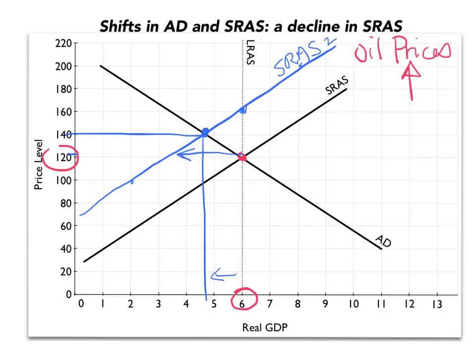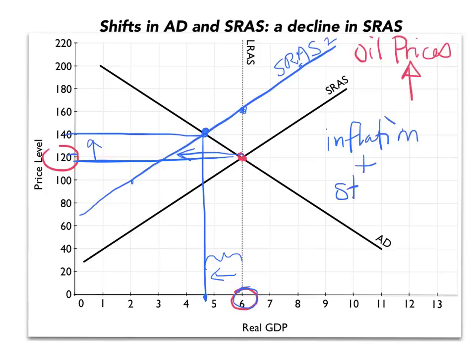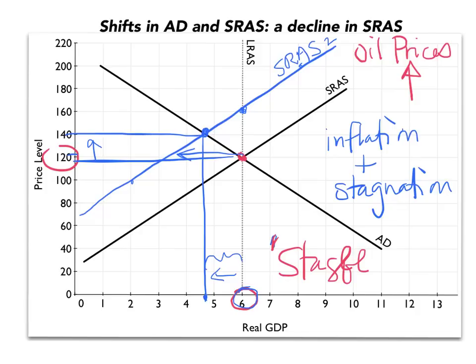So what we have is a decline in GDP. You have a recessionary gap here — the gap between the potential output of the economy and the actual current output. And you also have inflation, right? The price level has increased from what it was before. This combination of inflation plus economic GDP stagnation is called stagflation. The stagflation of the 1970s is captured by the leftward shift of the aggregate supply curve. This is a particularly nasty type of recession. Normal recessions are from shocks in the demand curve, but the 1970s saw several leftward shifts of the short-run aggregate supply curve, leading to both unemployment and inflation.